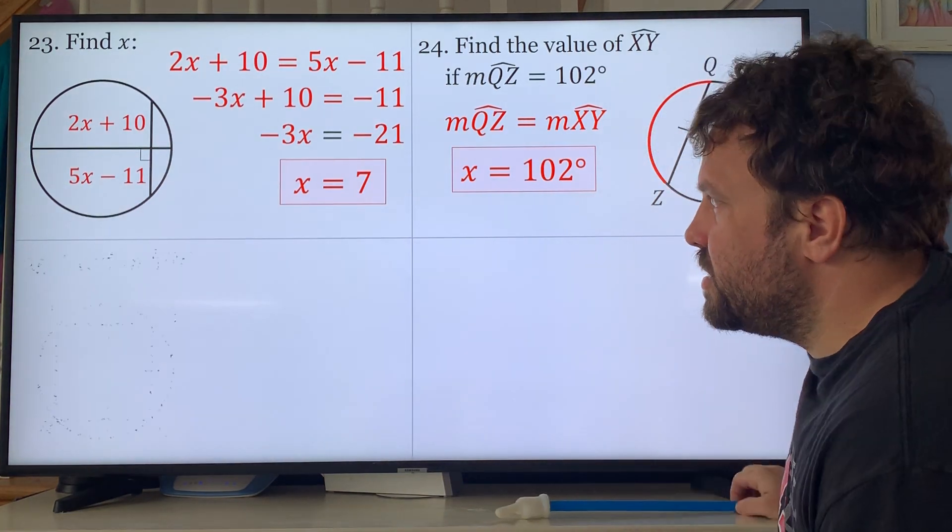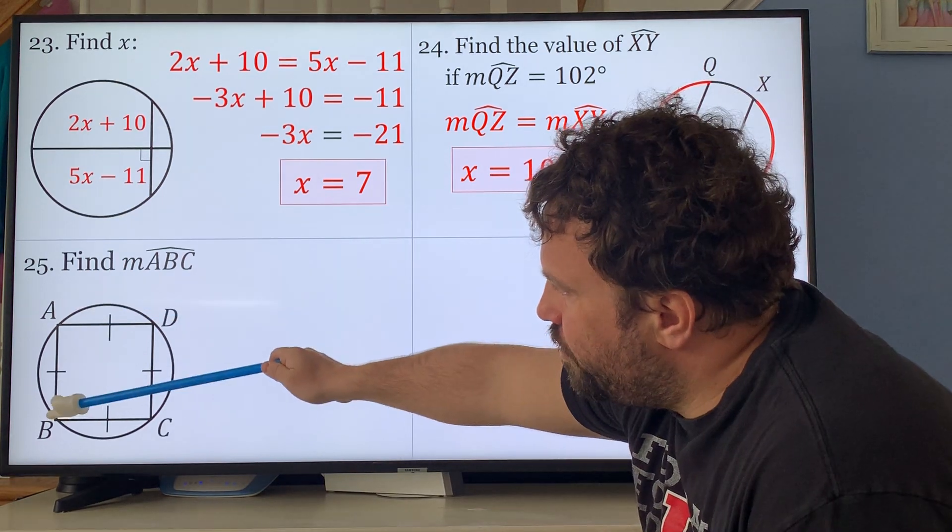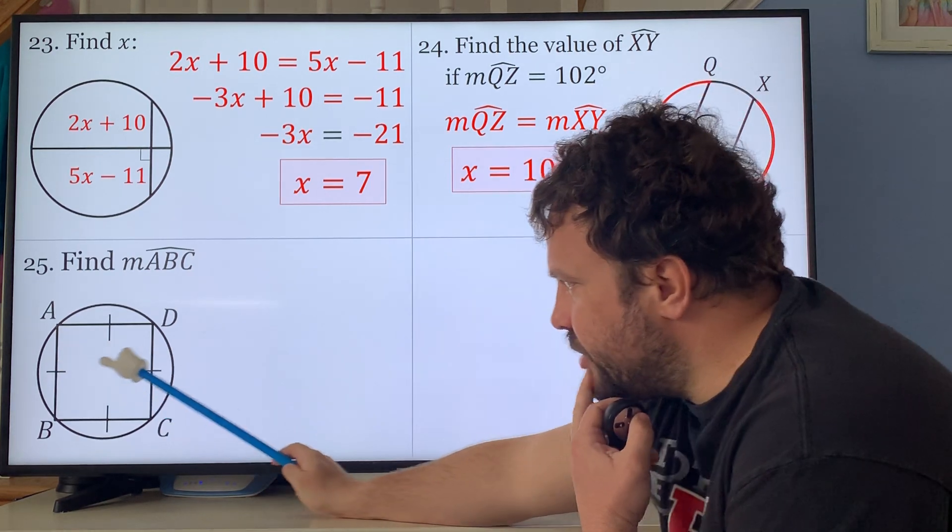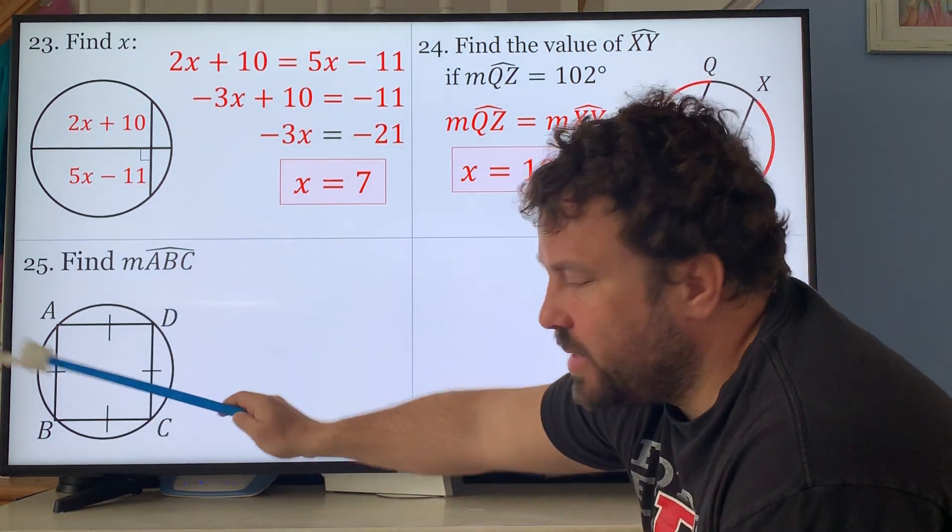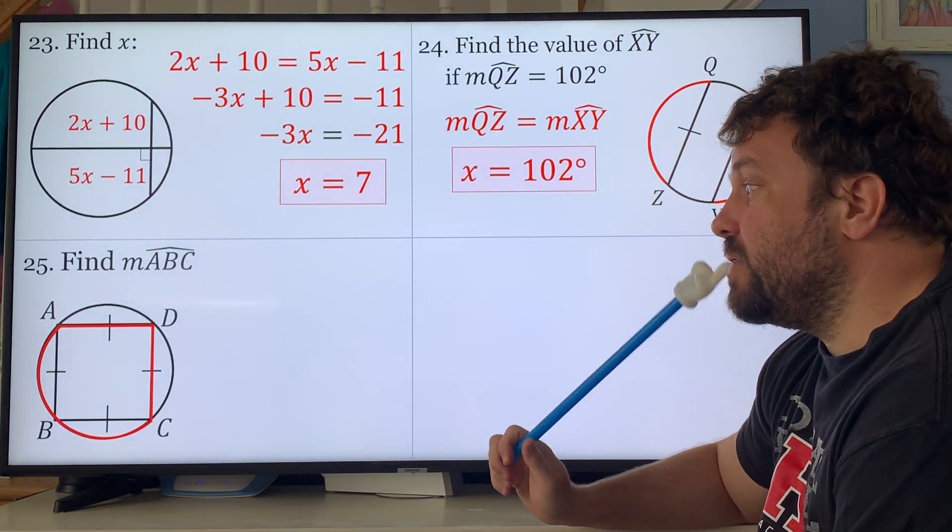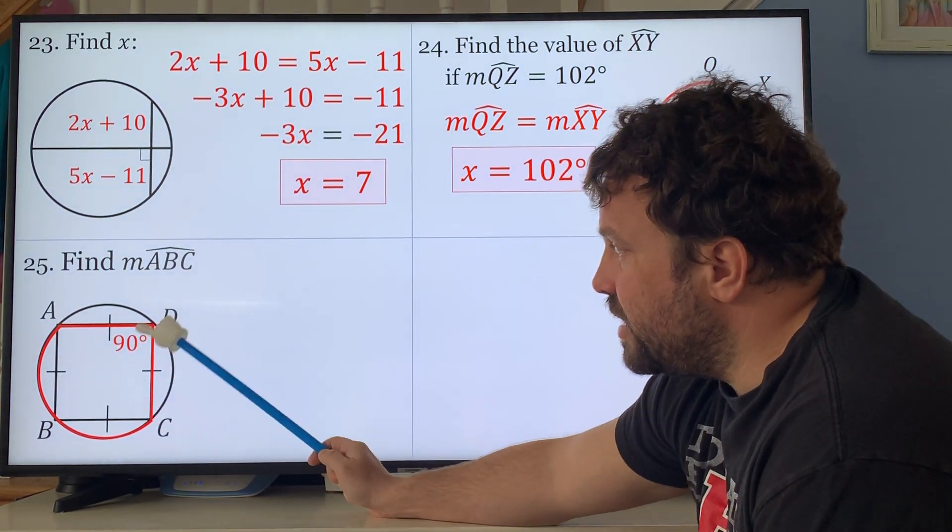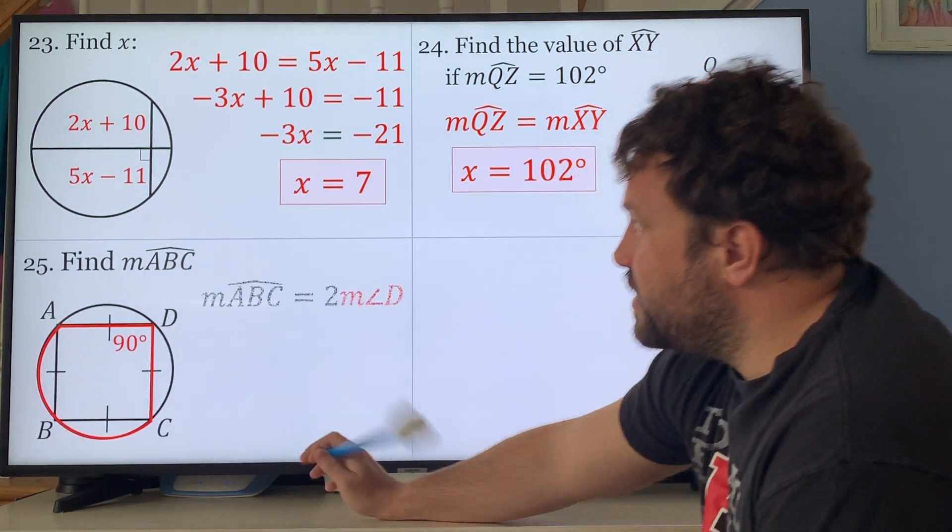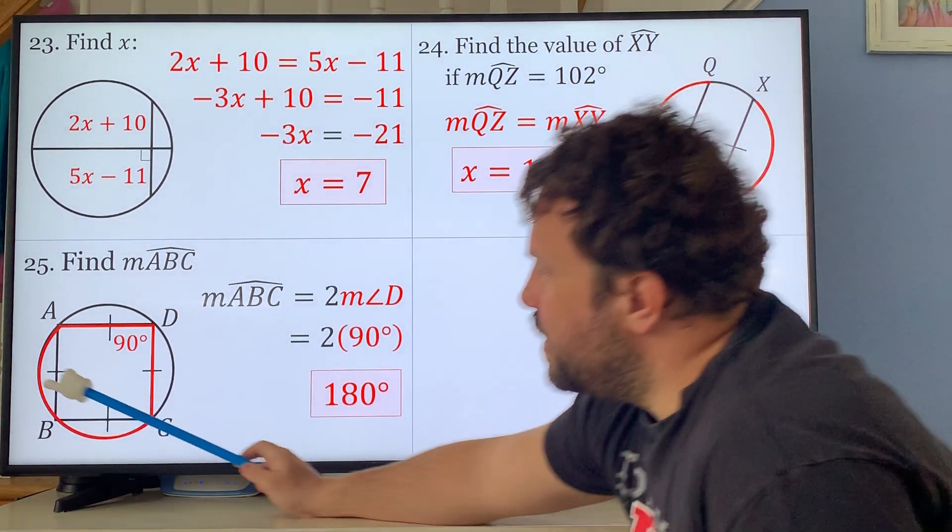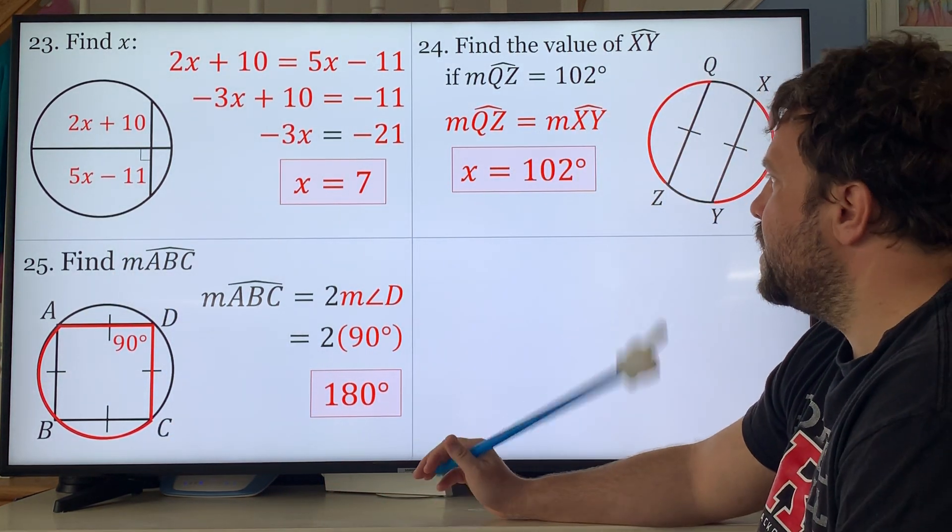Find the measure of arc ABC. You could do that in your head because all these chords are equal, all these arcs are equal, and all the arcs add up to how many degrees? 360. So we know that 360 divided by 4 is 90. If this is 90, this is 2 times 90 which is 180. You have two of them, you can do it that way as well.